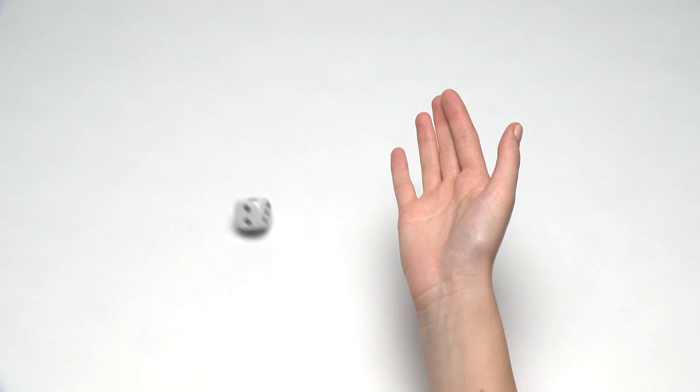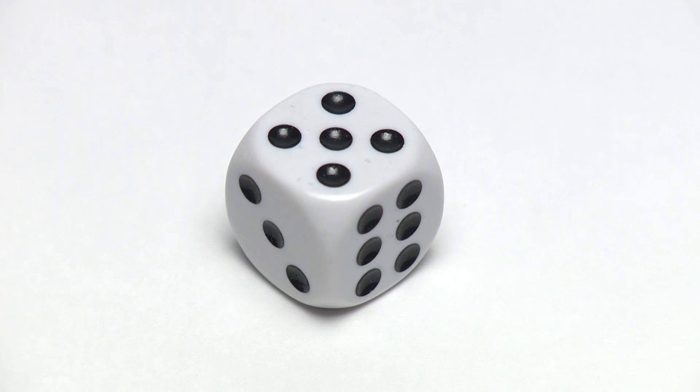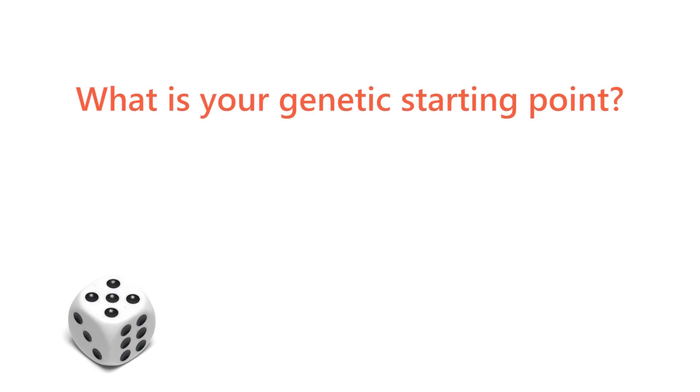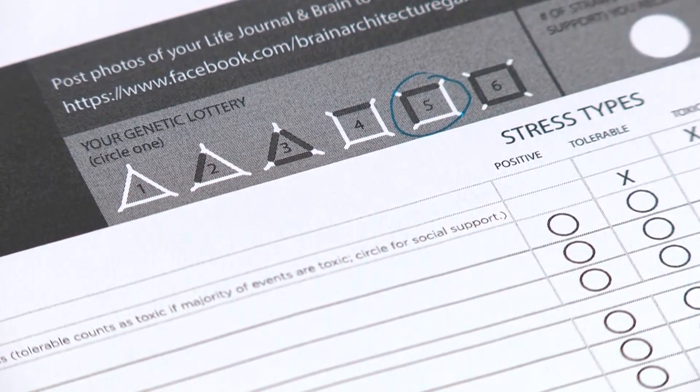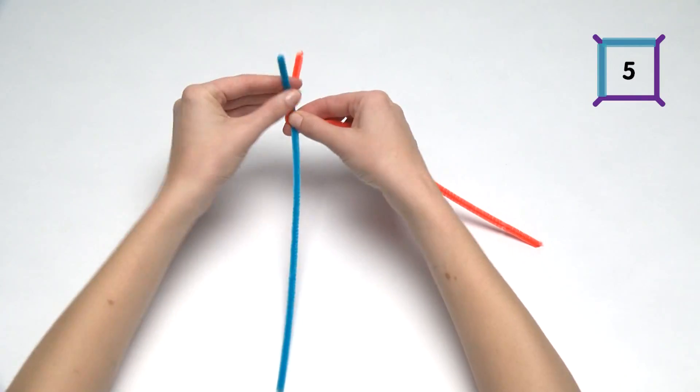The game starts, as life does, with a roll of the dice. What's your genetic starting point? Roll the die and check your life journal. Then build the corresponding base.